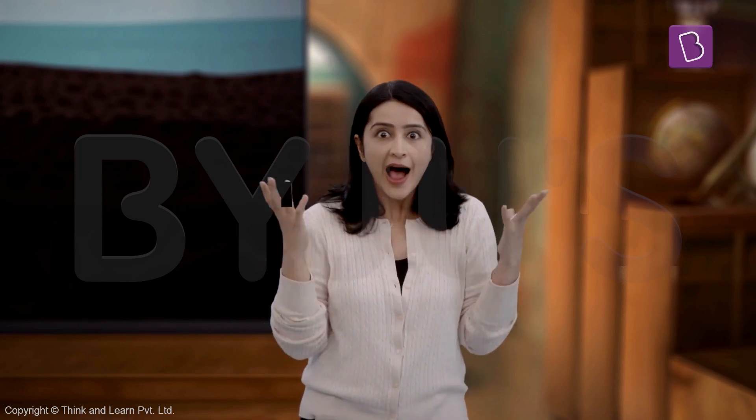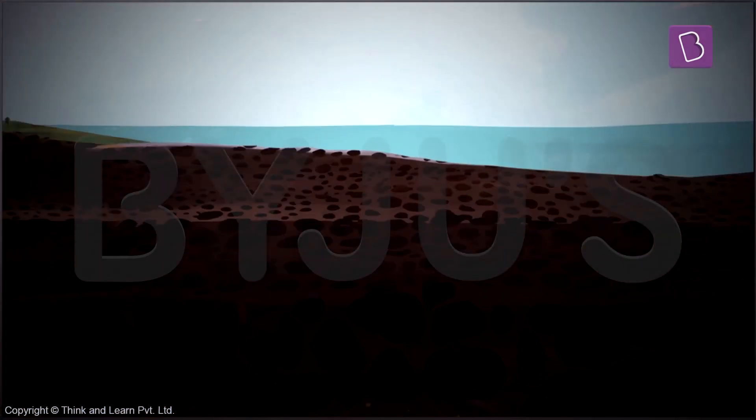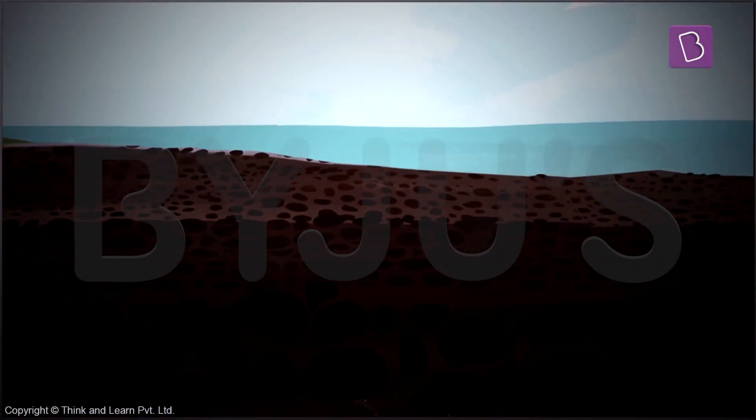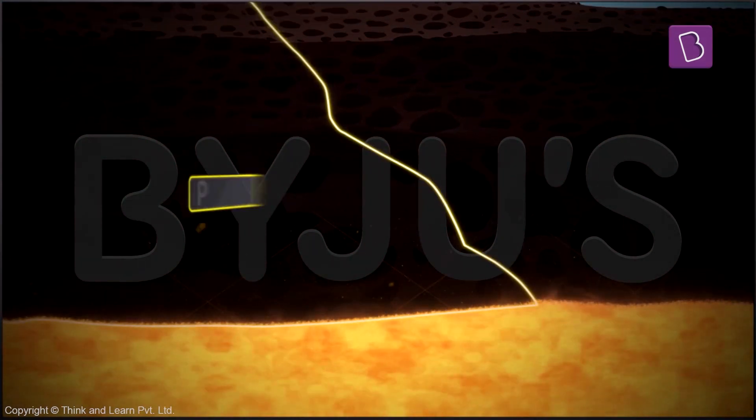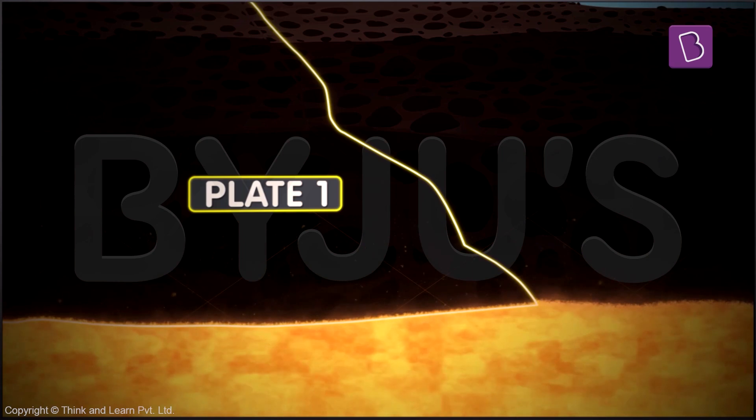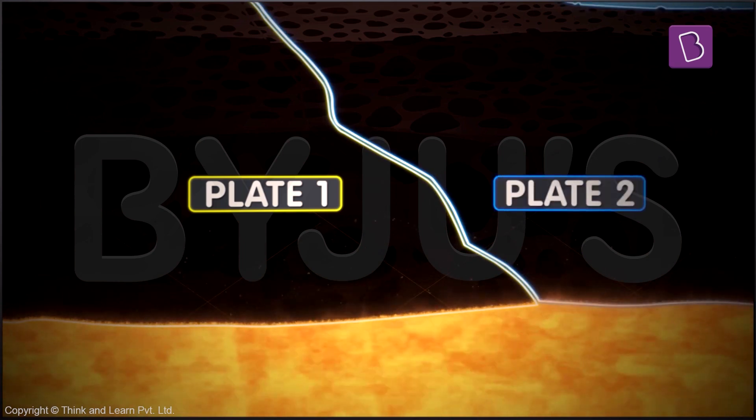Two gigantic lithospheric plates and one going underneath the other one. How does that happen? Okay, let's do one thing. Let's call the plate that goes under as plate 1 and the one that stays above as plate 2.